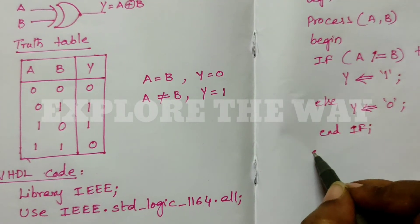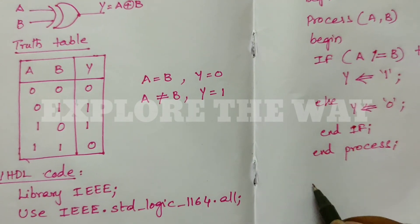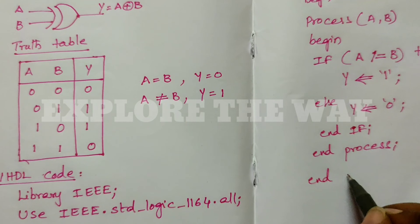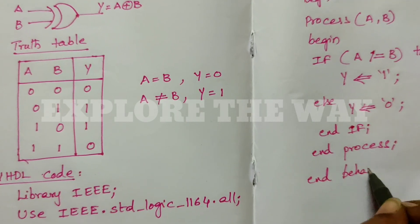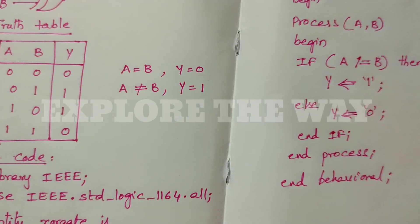Now end the process statement: end process. Then end the architecture: end behavioral. This is the behavioral architecture of the XOR gate.